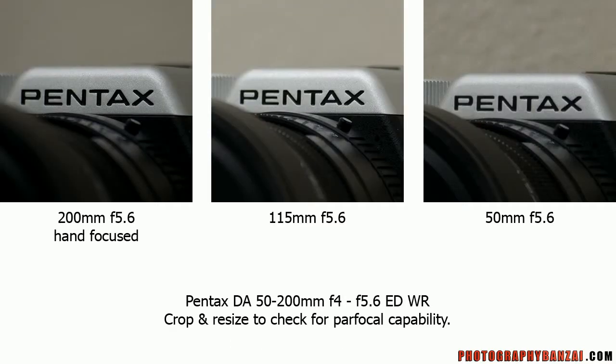Last test with the 50 to 200 millimeter lens. This one is nice and close — you can really see the difference here. At 200 millimeter f5.6, the Pentax text is nice and sharp. Then at 150 millimeter f5.6, you can see some differences with the focus — it looks front focused and the Pentax text is slightly blurrier. Then the 50 millimeter test looks about in between the two, but it is still more front focused than the 200 millimeter shot.